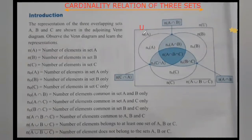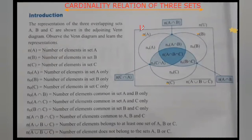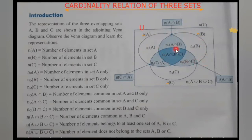Inside the universal set, we draw three circles. This circle represents set A, this circle represents set B, and this circle represents set C. The total number of elements in set A is represented by n(A).